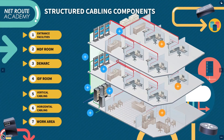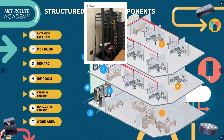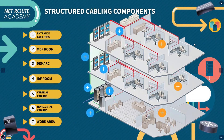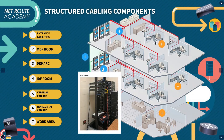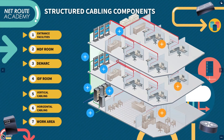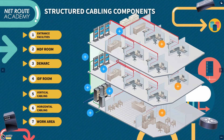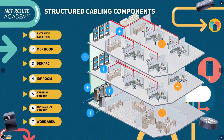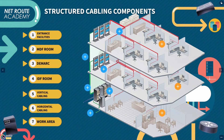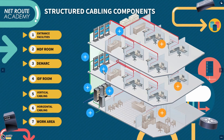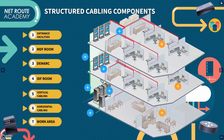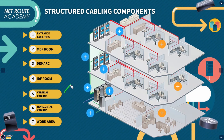Moving on, the next component is the IDF room. It provides an intermediate connection between the MDF and end-user equipment on each floor and each building. Again, the term IDF can refer either to the racks holding the network equipment or to the room that houses both the racks and the equipment.